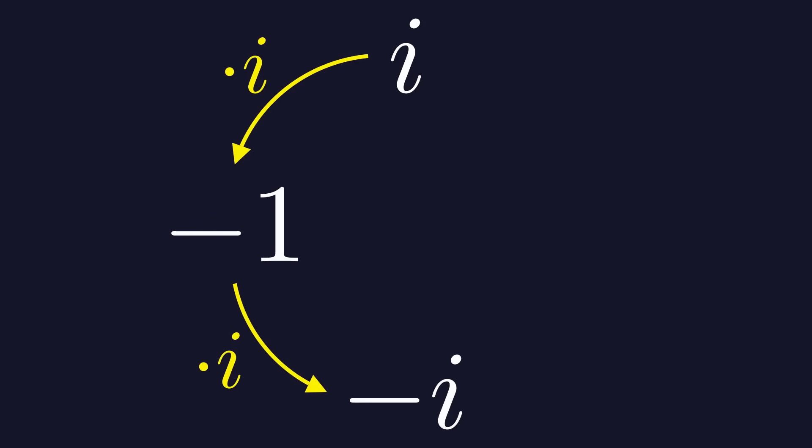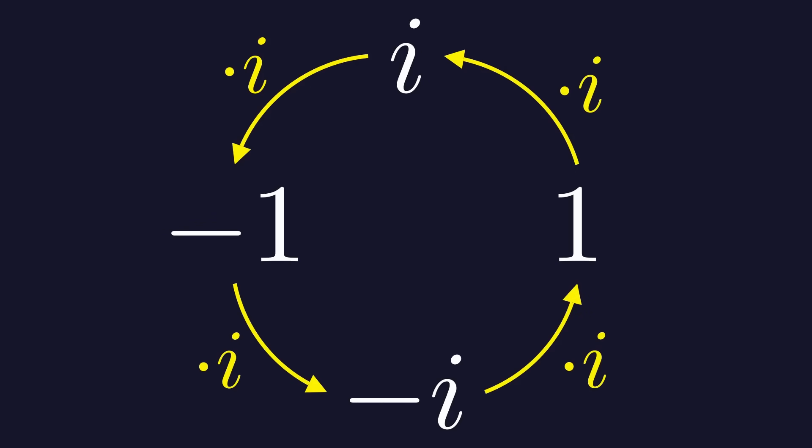When we multiply i by itself repeatedly, it creates a cyclic pattern: i, minus 1, minus i, 1, and again i.